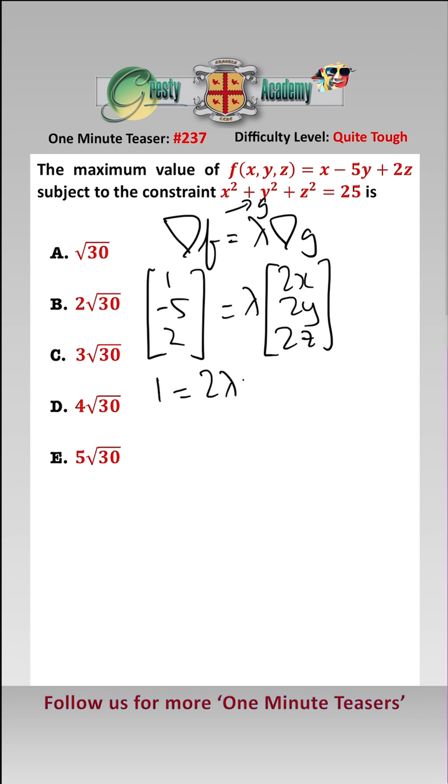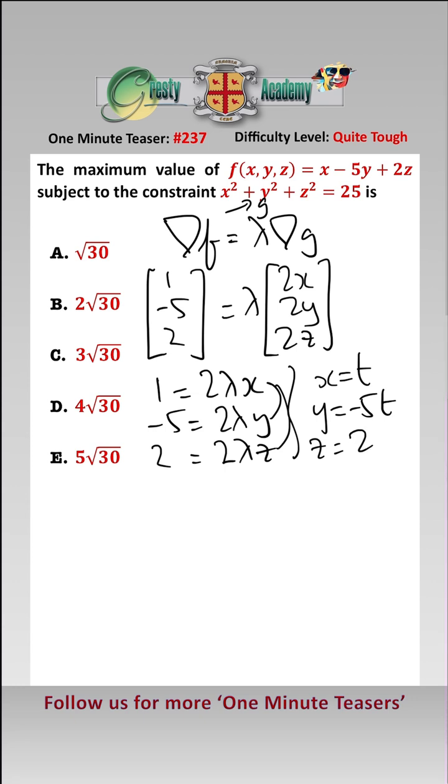1 equals 2 lambda x, minus 5 equals 2 lambda y, and 2 equals 2 lambda z. From these, let's let x equal t, and then the ratio gives us y equals minus 5t, and z equals 2t.